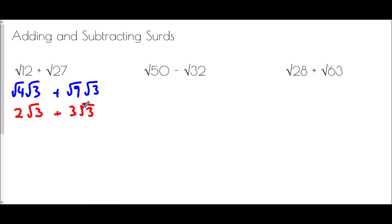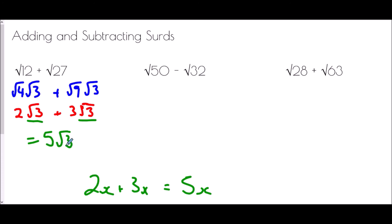Now the reason this is useful — think about algebra: if I said what is 2x plus 3x, you would say that is 5x. And this is exactly the same. x is just a number we don't yet know, and root 3 is exactly the same — it's a number we don't know the full value of. So if I have two of them and add another three of them, I can just treat them like x's. So this would be 5 root 3.